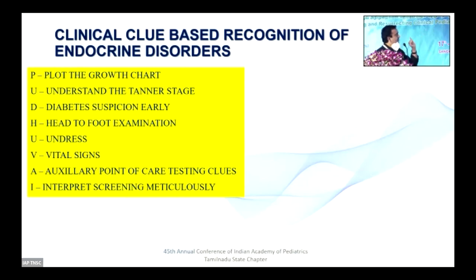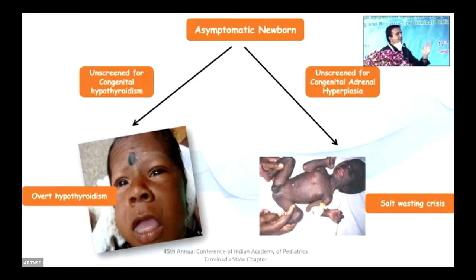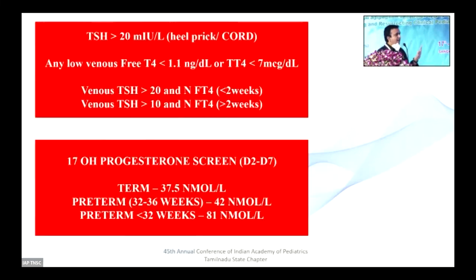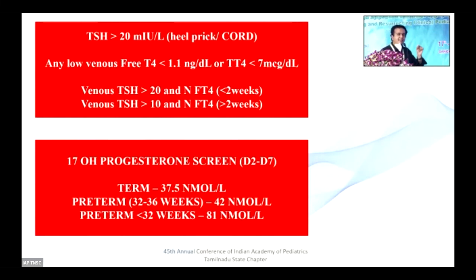The last clue is meticulous interpretation of newborn screening. There are two conditions where clinical examination can fail us and we must screen: congenital hypothyroidism and salt-wasting CAH. The Indian Society for Pediatric and Adolescent Endocrinology recommends heel-prick or cord TSH — if TSH is more than 20, look at the baby more carefully. The Indian Pediatrics 2020 statement provides cutoffs of 17-OHP for Indian babies: the important number to remember is 37.5 nanomoles per liter.